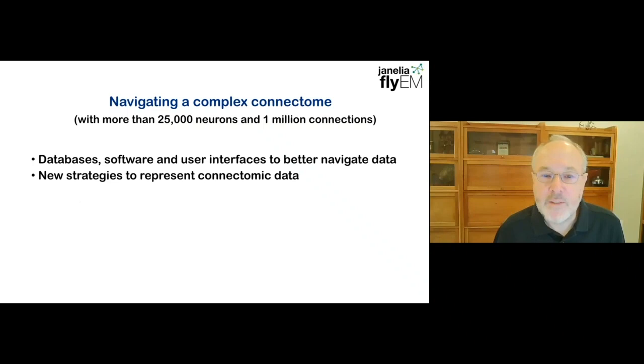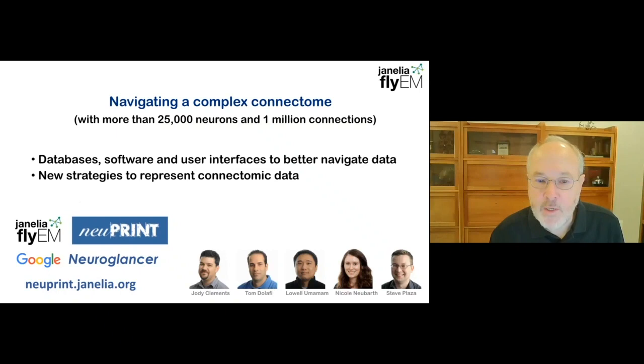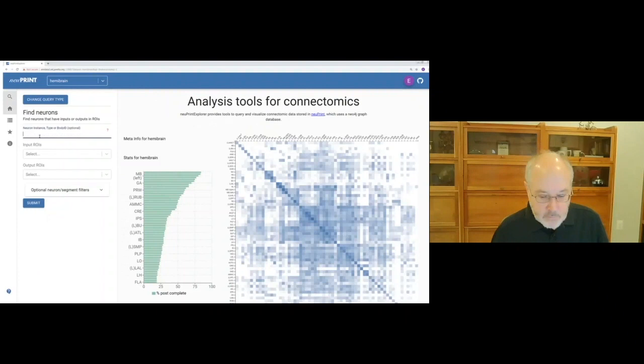The connectome of the hemibrain was released a few months ago with no restrictions on its use, along with analysis tools to make the data accessible. It is being heavily used. Analysis tools are necessary if the connectome is to be broadly accessible. Producing these tools required a significant software engineering effort. I'm going to show you such a tool, Neuprint, that was released in January. As illustrated by the video I'm going to show you, which is but one of many instructional videos.